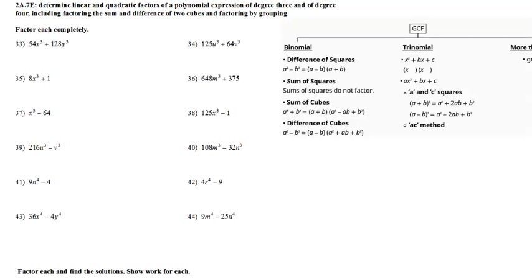Objective 7e: determine linear and quadratic factors of a polynomial expression of degree 3 and degree 4, including factoring the sum and difference of two cubes and factoring by grouping. If you recall from the previous video for 7d, here are your formulas for sum and difference of cubes. Go ahead and write these in your notes if you haven't already.